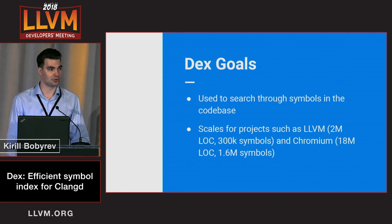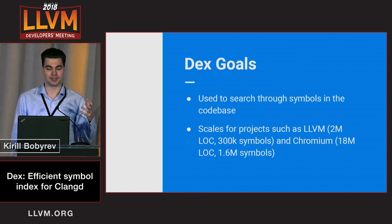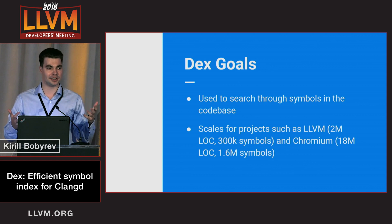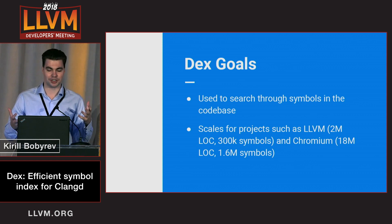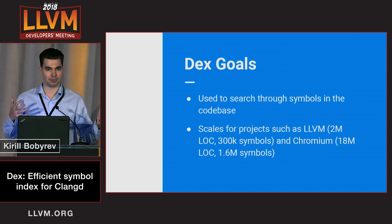The new symbol index is called DAX, and our vision for DAX was influenced by several factors. We wanted open source developers to be able to run global code completion without noticeable latency. We wanted it to be high quality, and we wanted our index to scale well for large projects such as LLVM and Chromium.